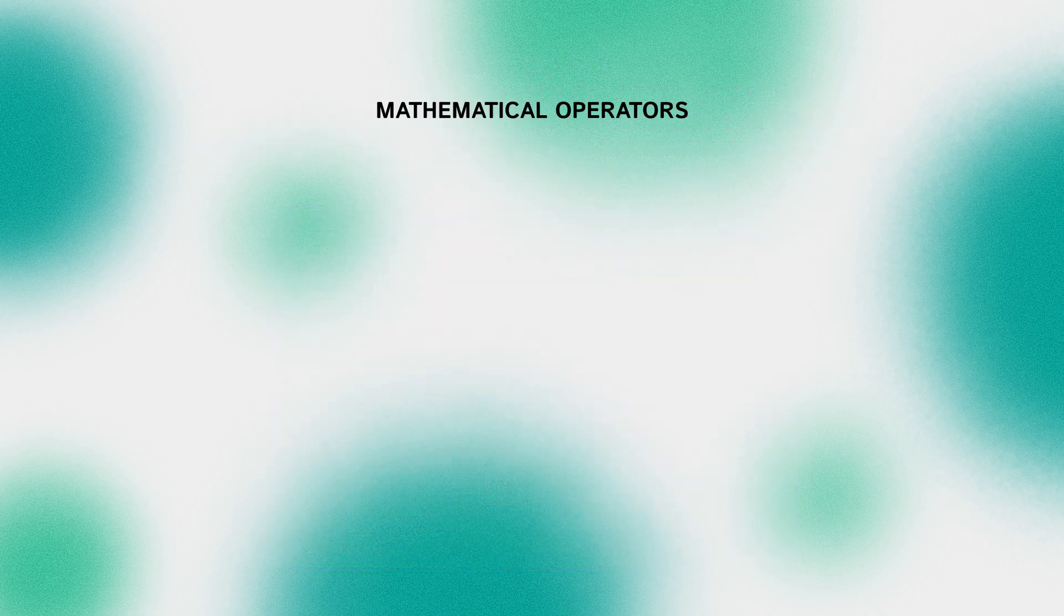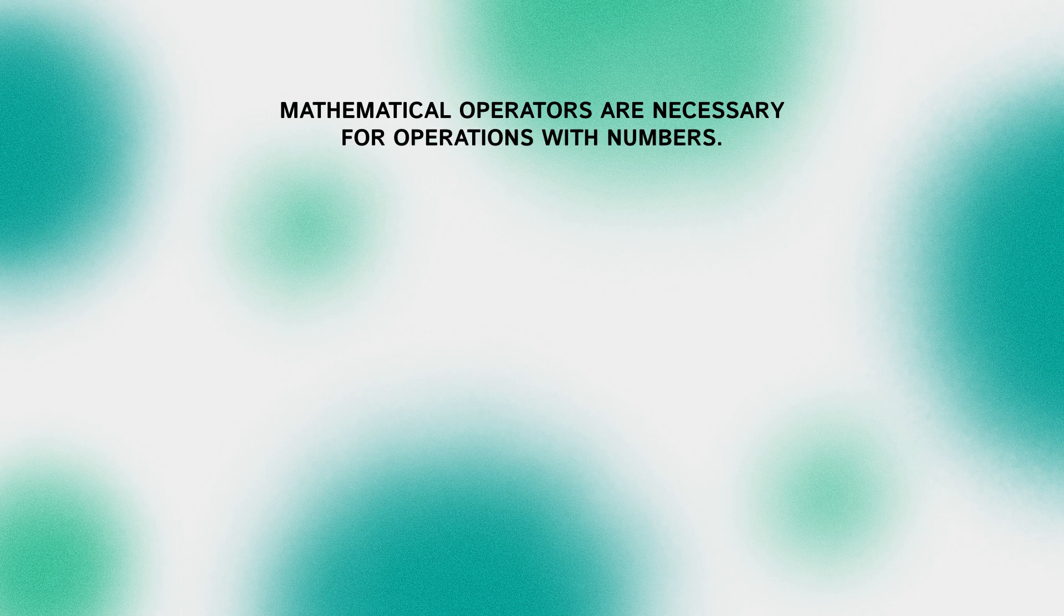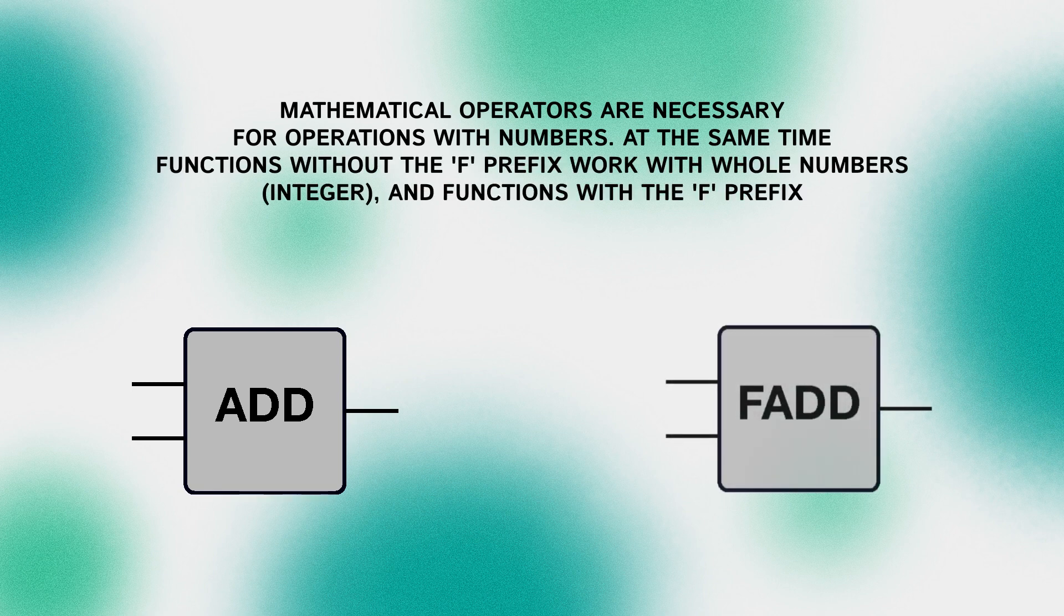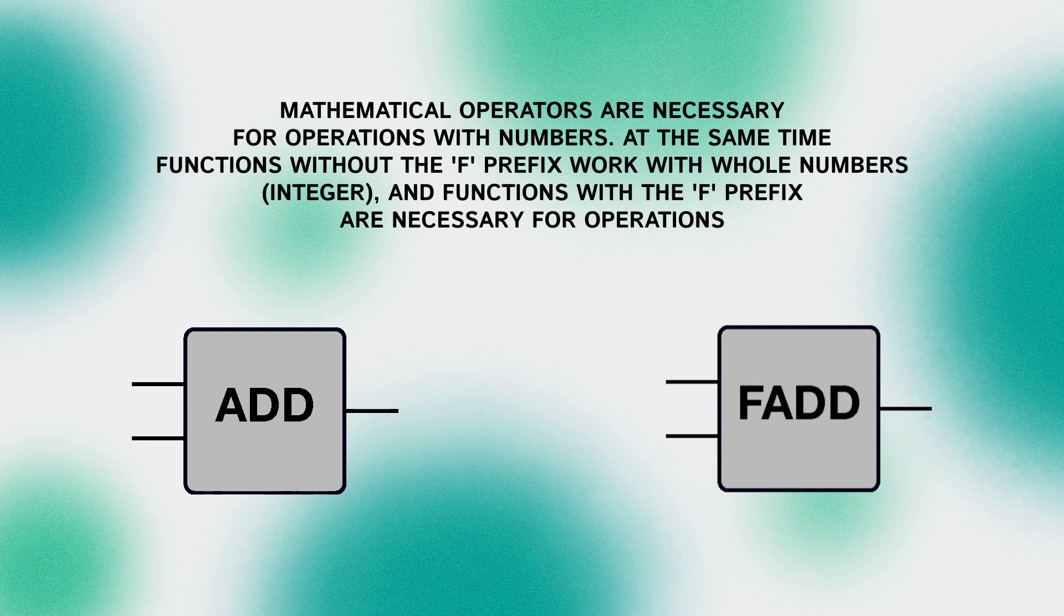Mathematical operators are necessary for operations with numbers. At the same time functions without the F prefix work with whole numbers (integer), and functions with the F prefix are necessary for operations with real numbers (float).